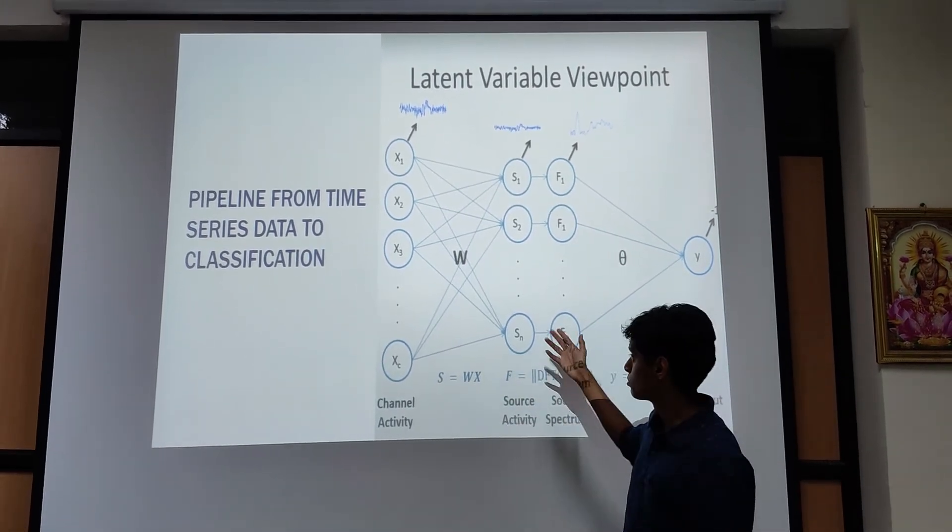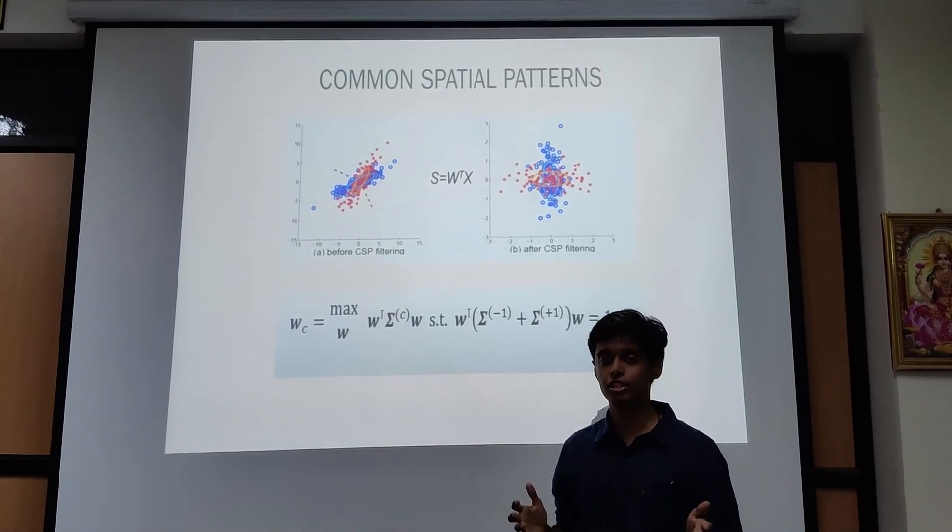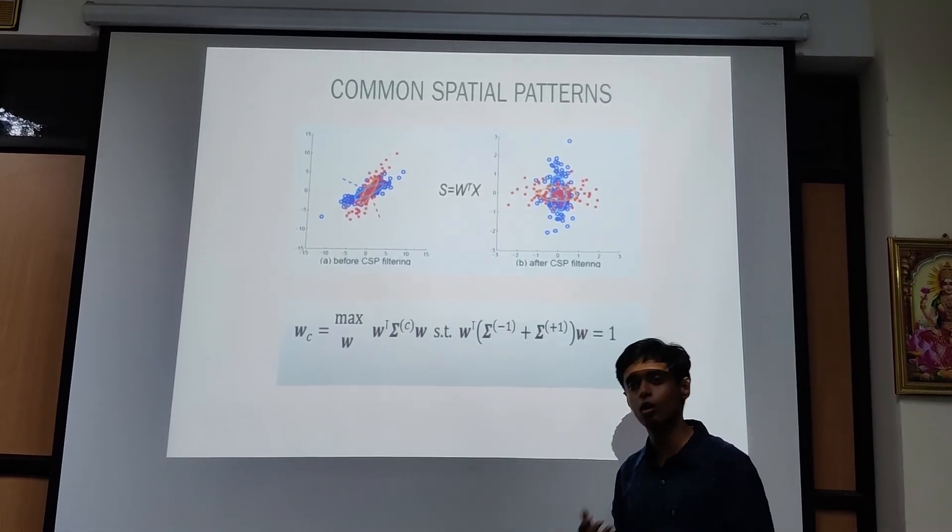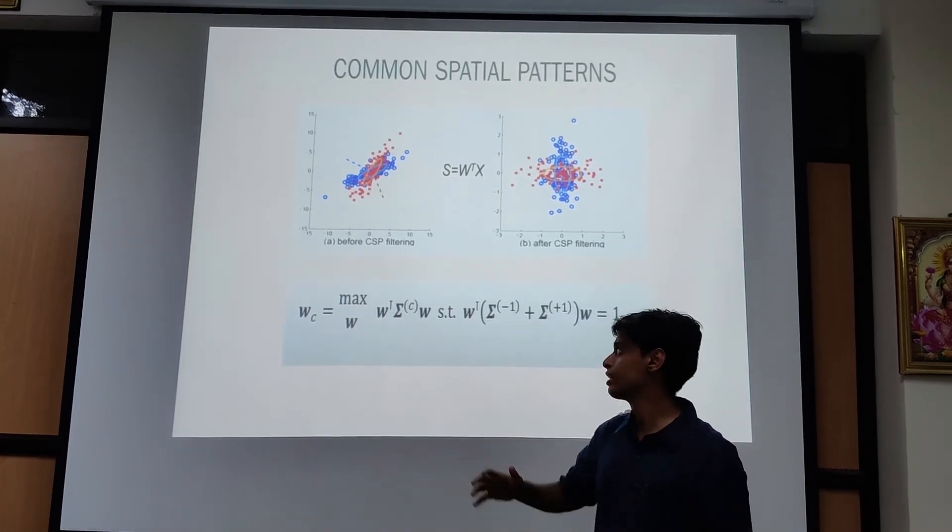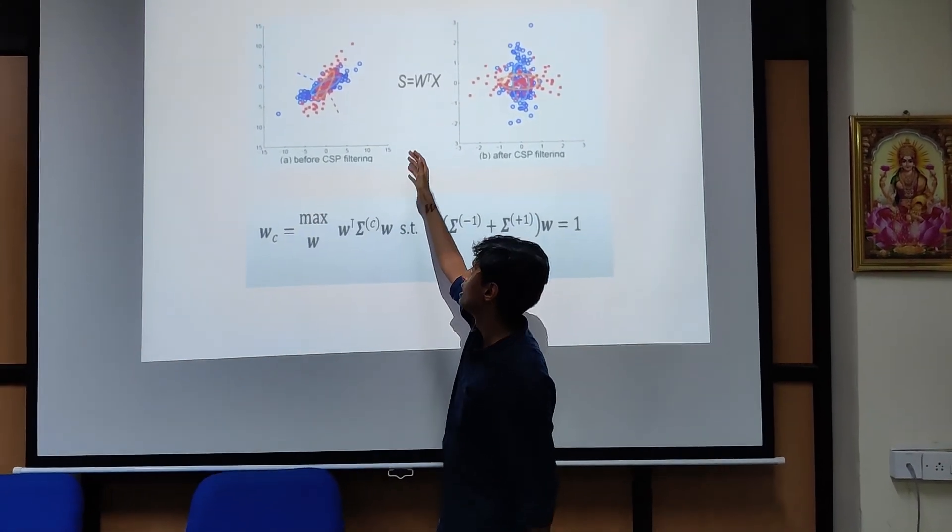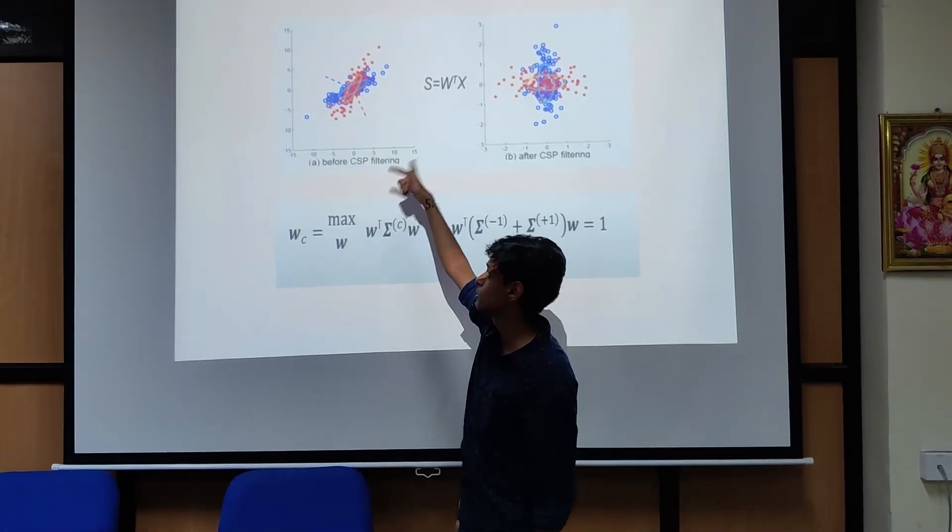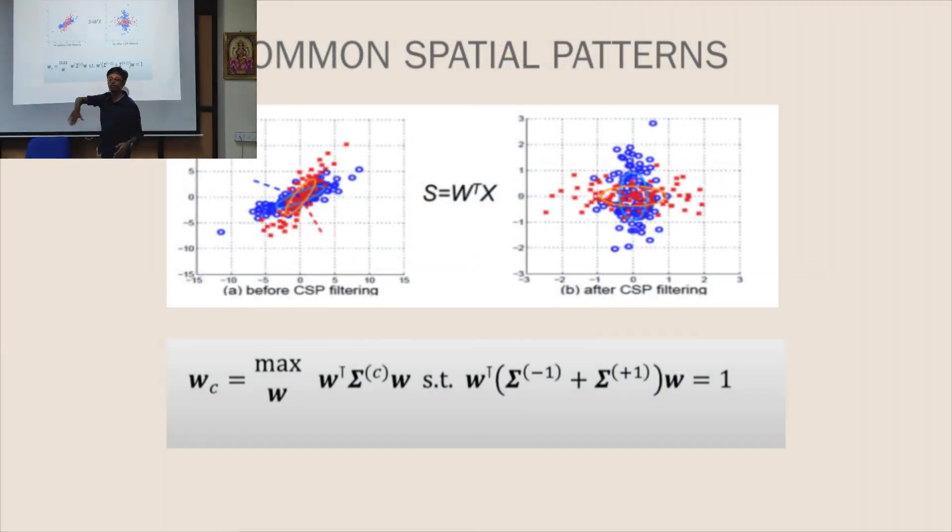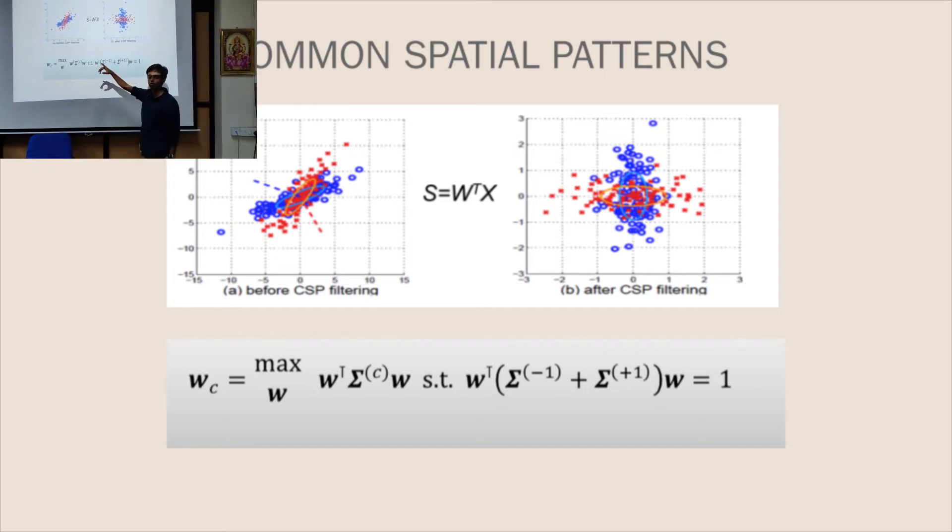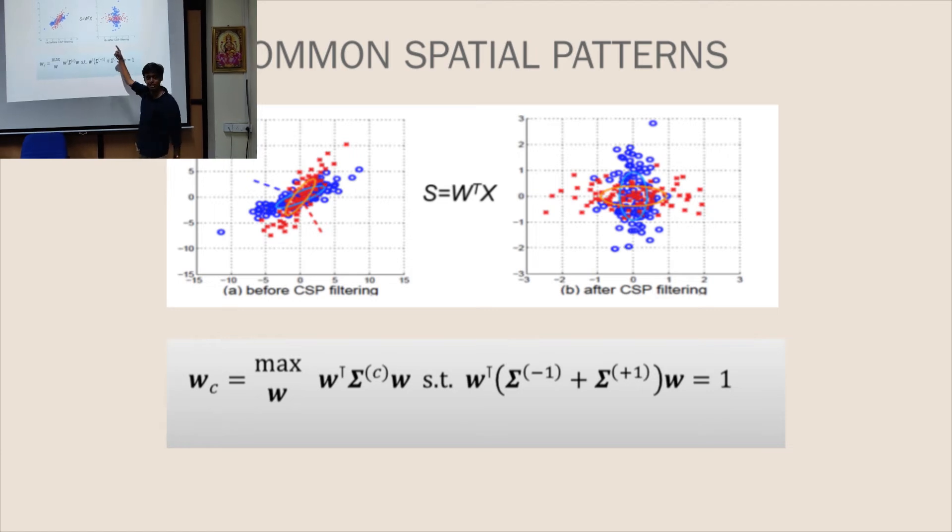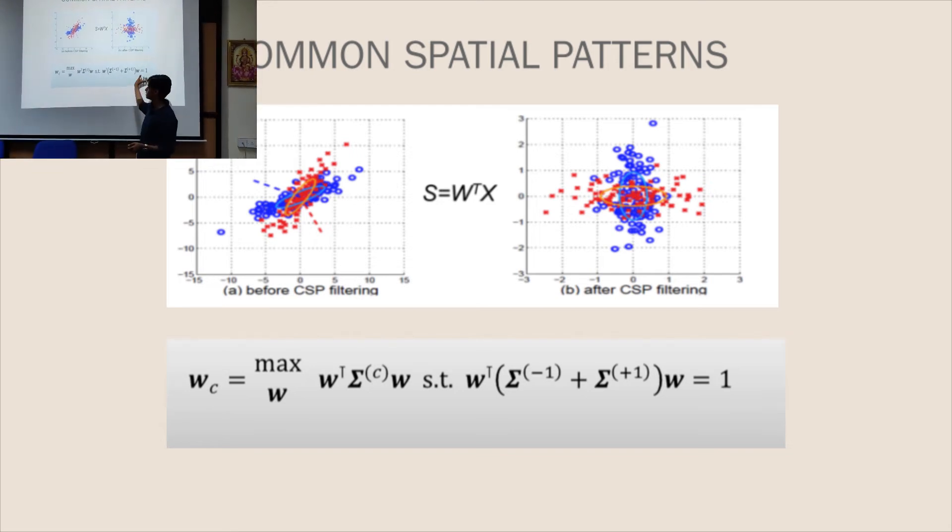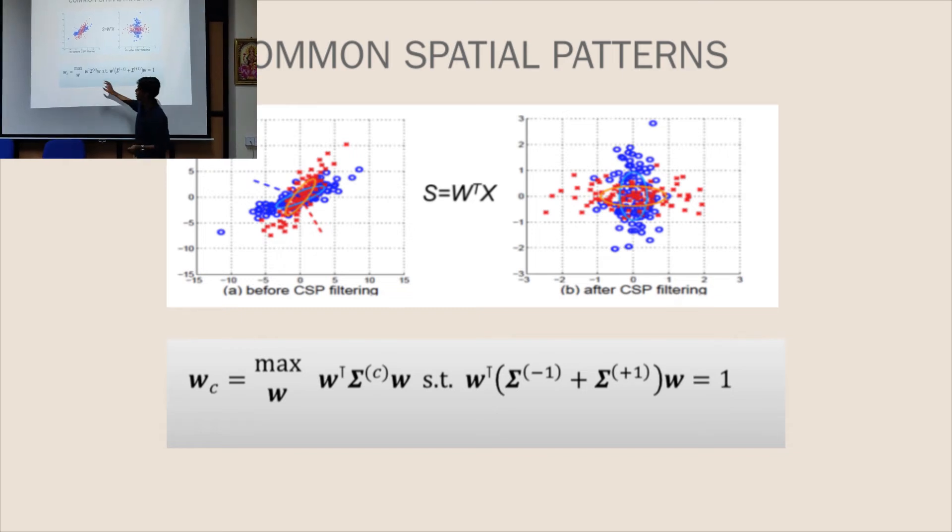It becomes solvable as a simple optimization problem, a constraint optimization problem. And that is called spectral CSP or specifically common spatial pattern. The job of common spatial pattern filtering is to maximize variance between data. Before CSP filtering you see that the left hand corresponds to one color, the right hand corresponds to the other color. It's not really possible to differentiate that before CSP filtering, but after CSP filtering you know that when you distribute the scatter plot of the amplitude, you see that one varies across another channel and that maximizes the variance and diagonalizes the data.